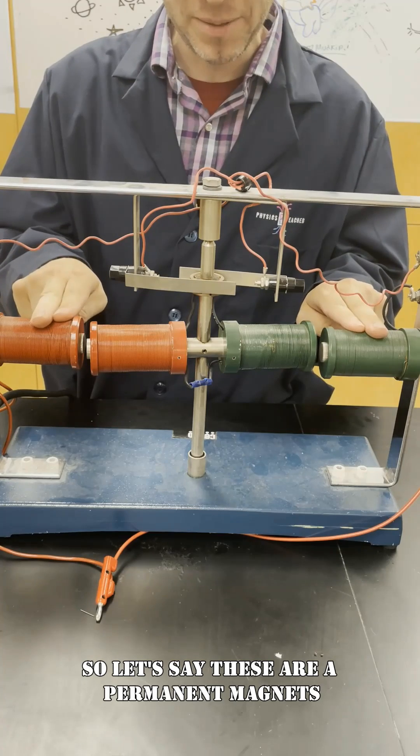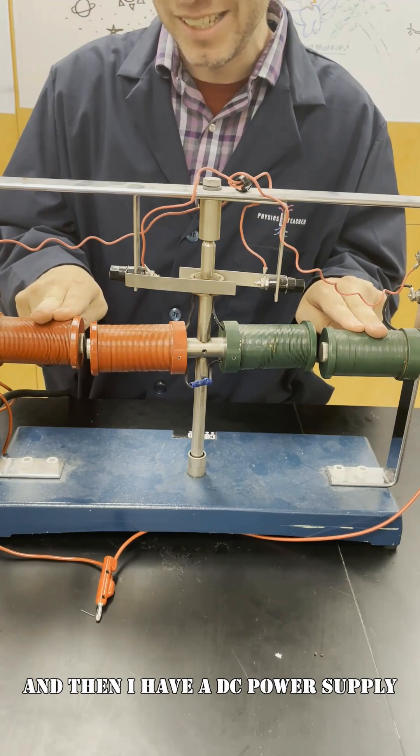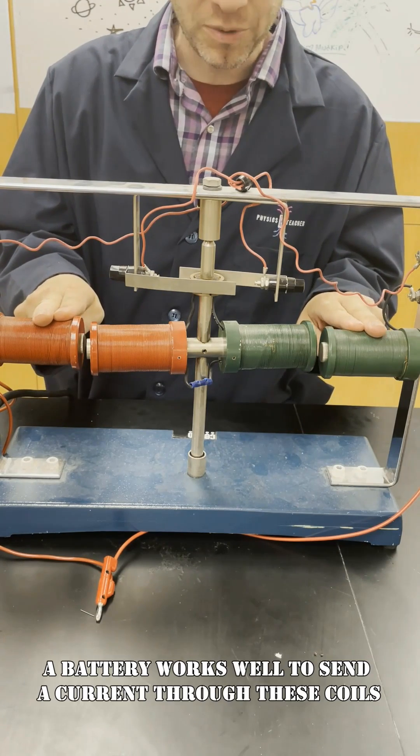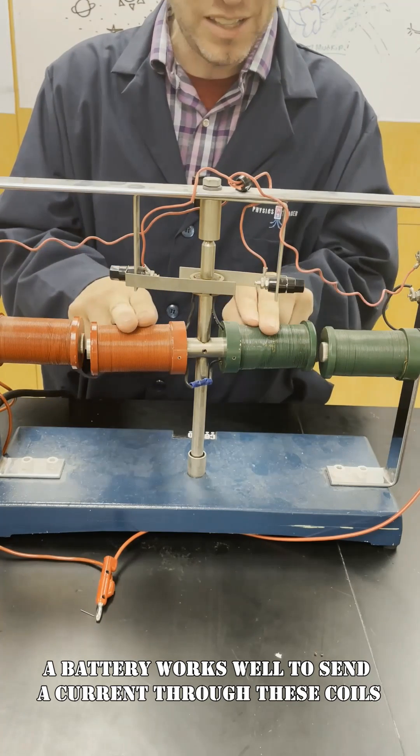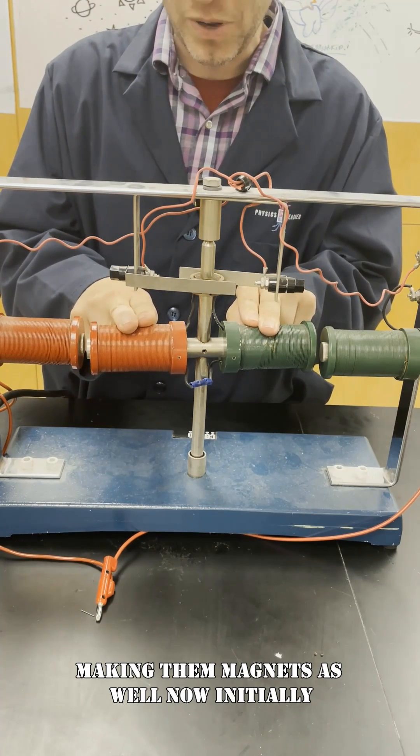So let's say these are permanent magnets and then I have a DC power supply, a battery works well, to send a current through these coils making them magnets as well.